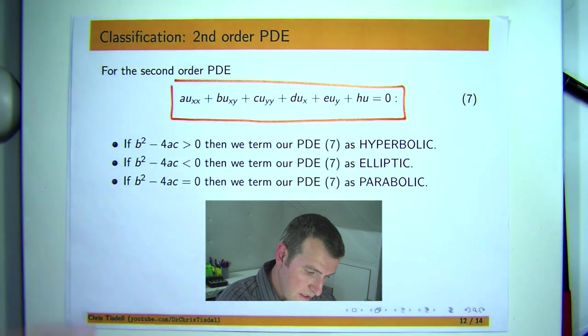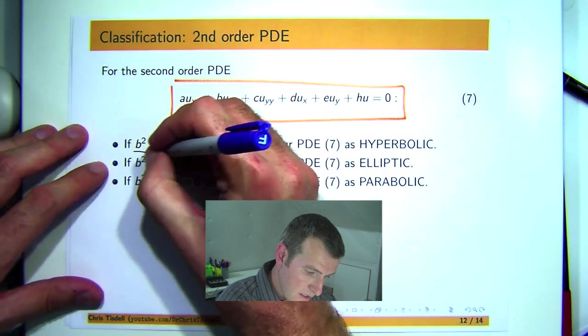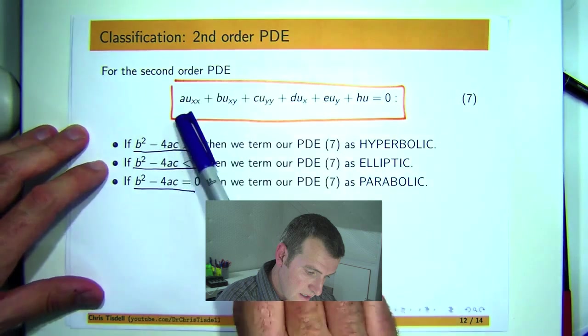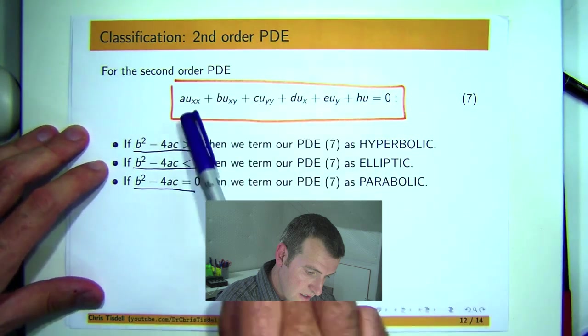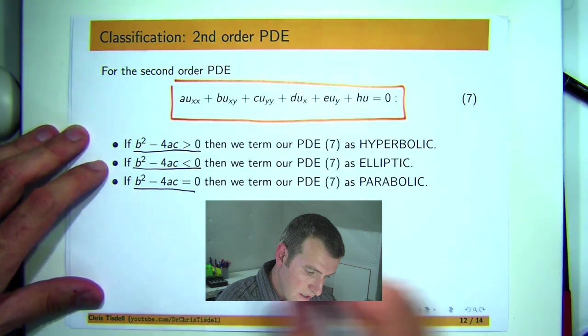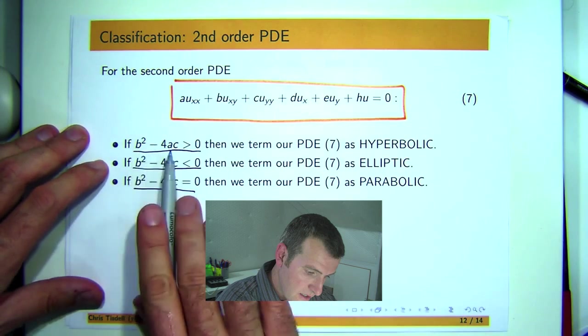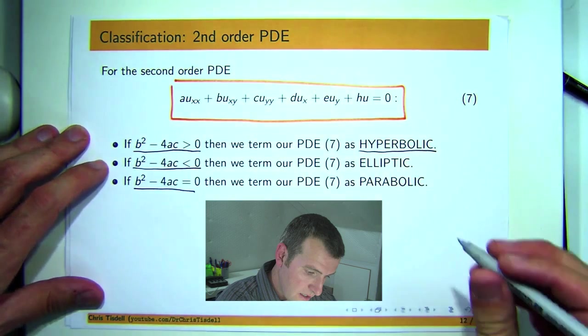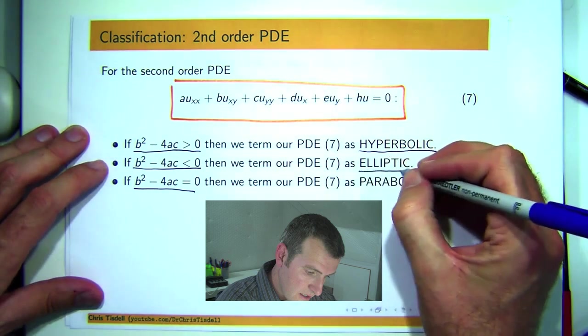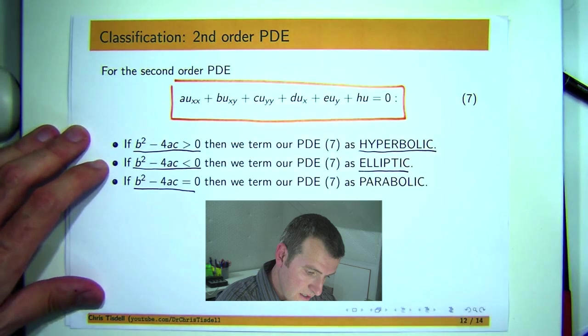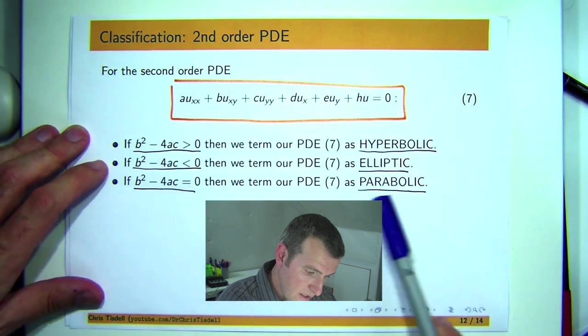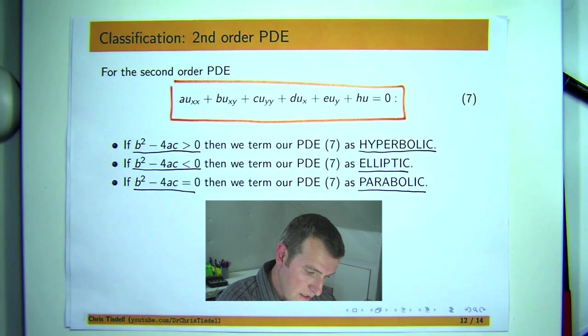So what were those ideas? Well you look at the discriminant involving the coefficients of the first three terms, which feature purely second-order derivatives. If the discriminant type expression is positive, then you term your PDE as hyperbolic. If it's negative, we term the PDE as elliptic. And lastly, if the discriminant is zero, then we term our PDE as parabolic.